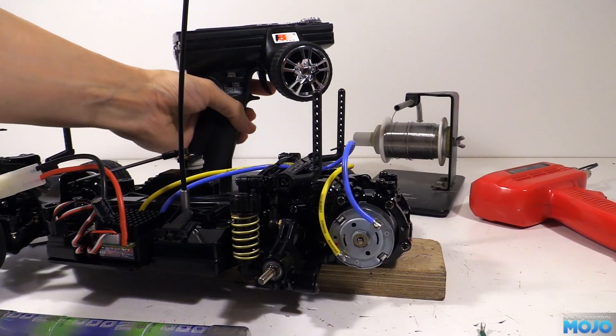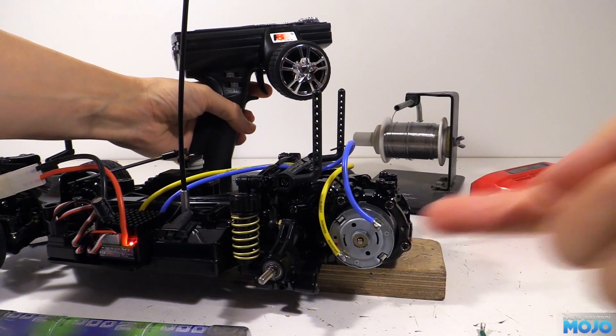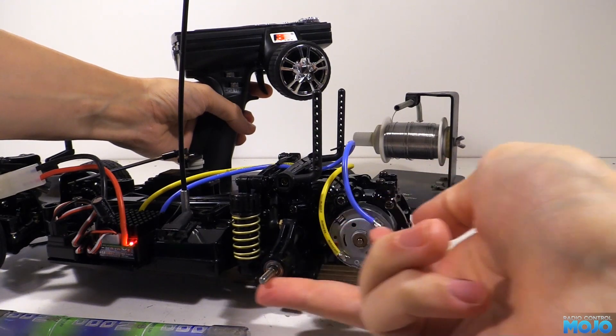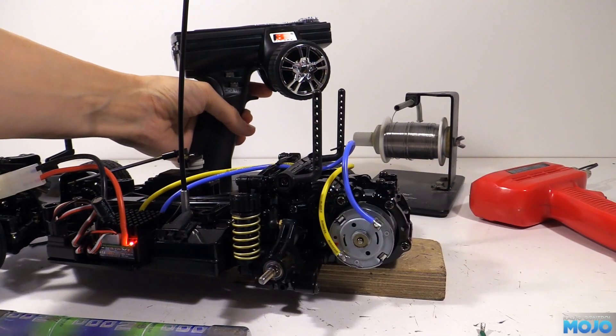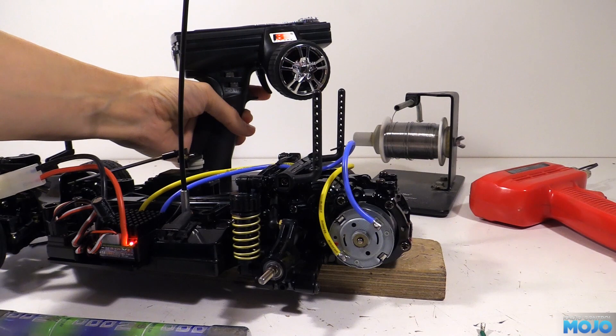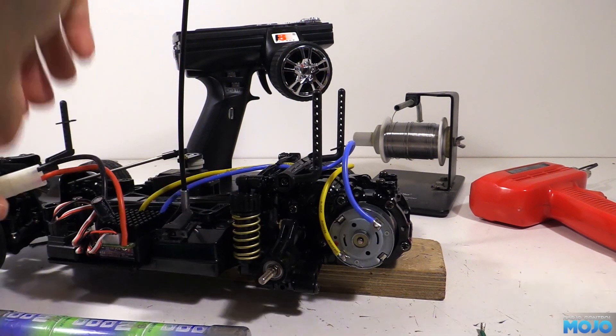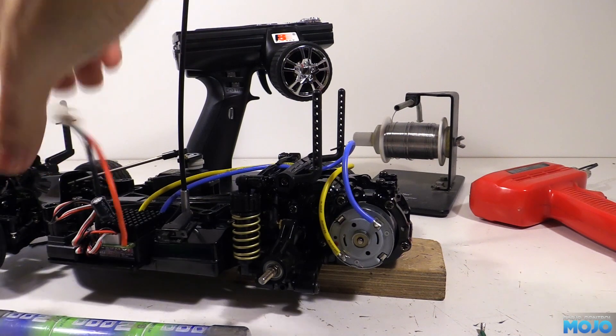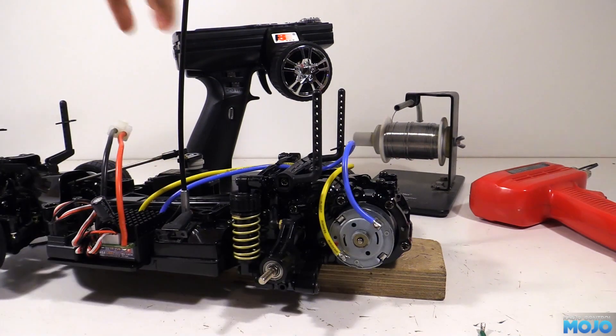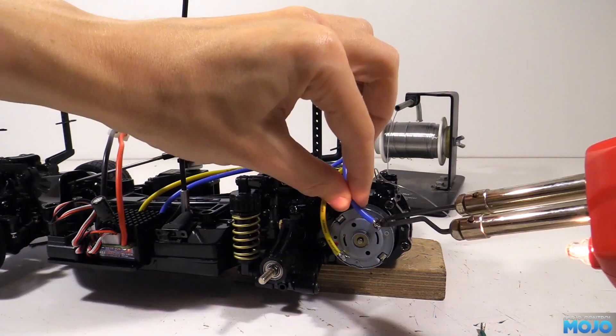Pulling the trigger should make the axle spin forwards. But it doesn't. OK, one more test. Pushing the trigger away should be the brakes. And pushing it away again should be reverse. And it is. So, the channel reverse on the transmitter is set correctly, but the motor is wired up backwards. All we need to do is swap the wires around.